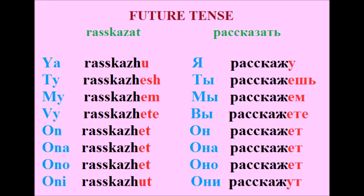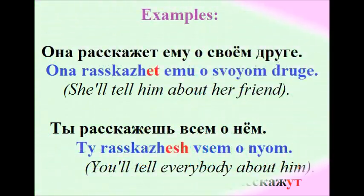Future tense of рассказать: Я расскажу, ты расскажешь, мы расскажем, вы расскажете, он расскажет, она расскажет, оно расскажет, они расскажут. Examples: Она расскажет ему о своём друге — She will tell him about her friend. Ты расскажешь всем о нём — You will tell everyone about him.